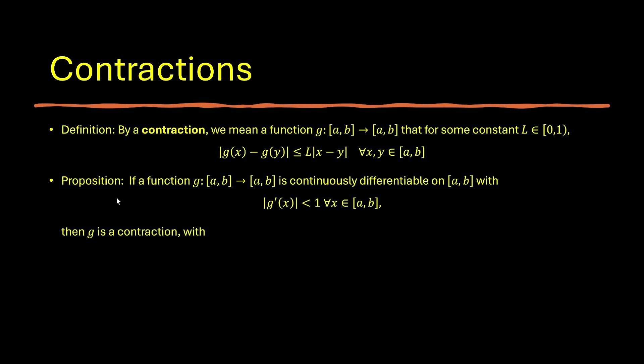So the next proposition helps us identify contractions under certain situations. It says if a function g that maps from the closed interval a to b into itself is continuously differentiable on a to b, with the absolute value of g prime of x, that is the derivative of g, strictly less than one for every x in a to b. Then we can conclude that g is a contraction, with the shrinkage factor L equals to the maximum of g prime absolute value for x in a to b. When this proposition is applicable, we can easily show a function is contraction, because you just need to verify two things, that is, g maps a closed interval into itself, as well as the absolute value of the derivative is strictly less than one.